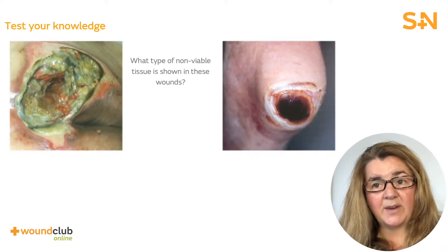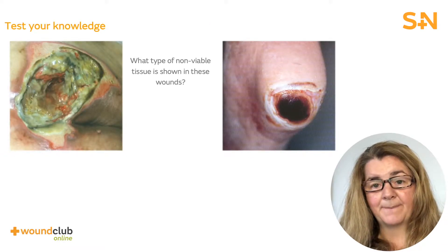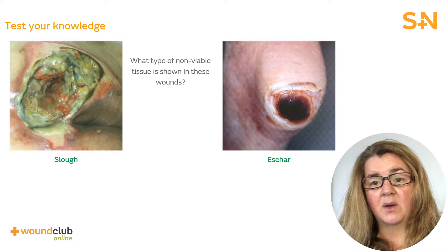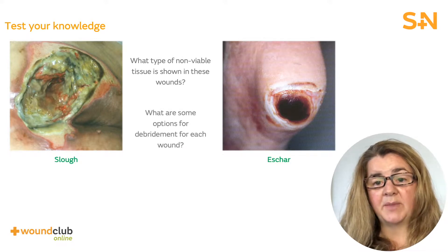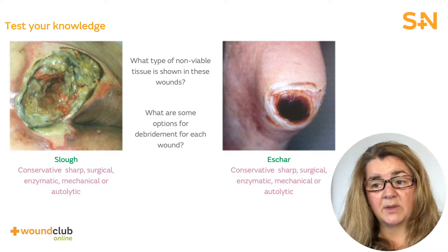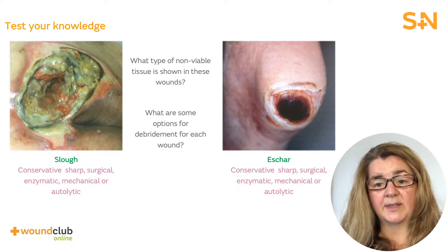Name the non-viable tissue types in the photos. The wound on the left contains slough; on the right it's eschar. What are some options of debridement? Conservative sharp, surgical, biosurgical, enzymatic, mechanical, or autolytic.